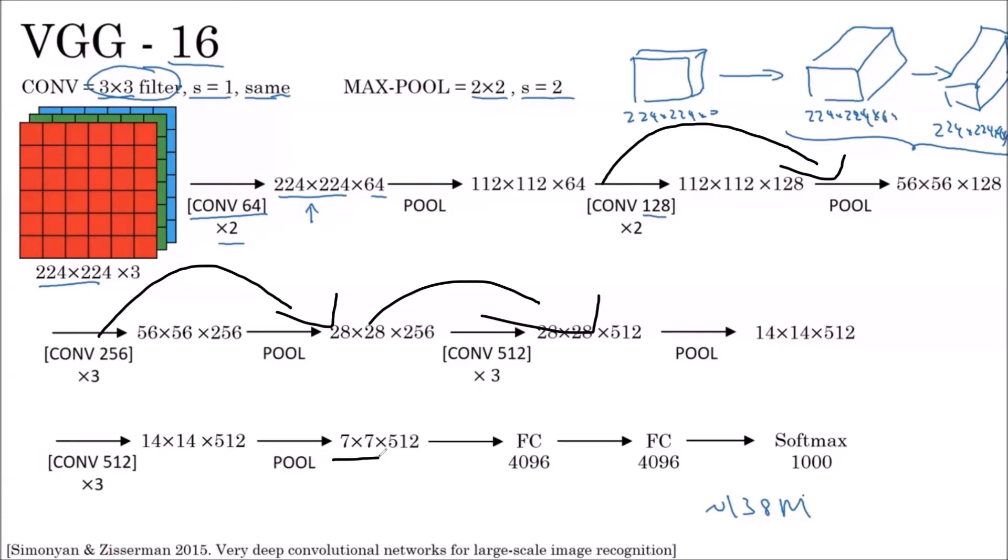Finally, the final size is 7 by 7 by 512. They have used the flatten layer, and then finally it is becoming 4096. After the flattening, there are some number of neurons, and we are getting some number of neurons.